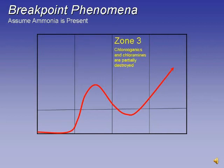Zone 3: Chlororganics and chloramines are partially destroyed. A minute amount of nitrogen gas is given off during this phase.